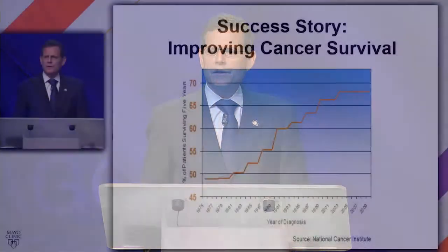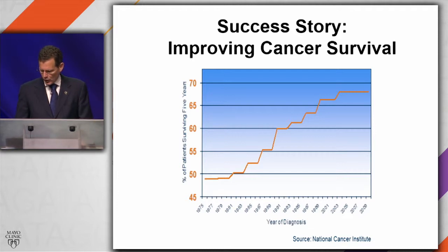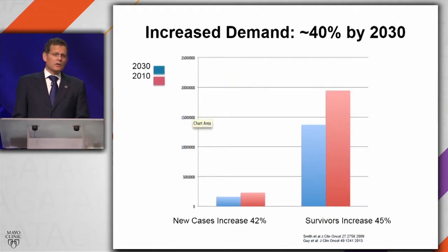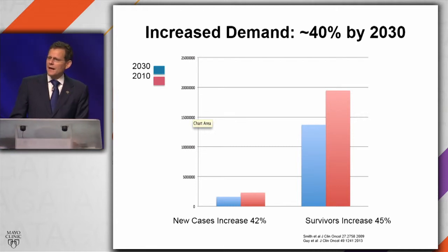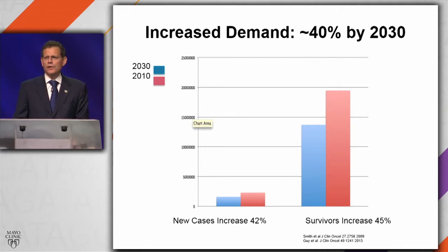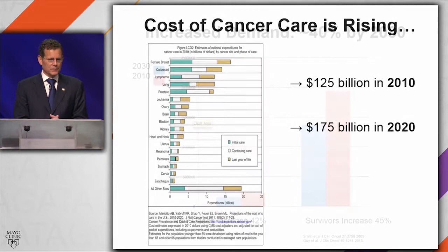Cancer is a success story. The overall five-year survival for all cancers has been rising really since the 1970s. This is leading to a paradoxic problem, which is the problem of too much success from a healthcare cost point of view. The number of people who are surviving cancer, living with cancer, being treated for cancer, is projected to increase by 45% by 2030. So whatever problems we face today with high prices are going to simply be magnified unless we do something about this.